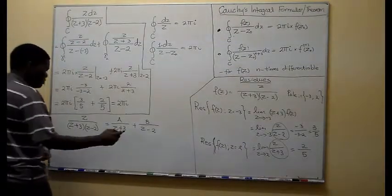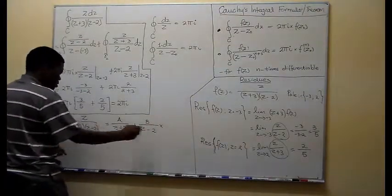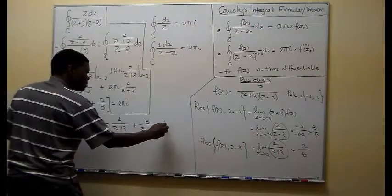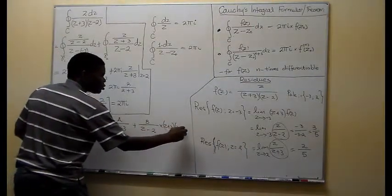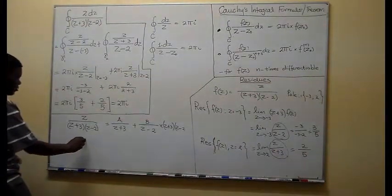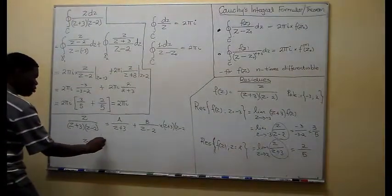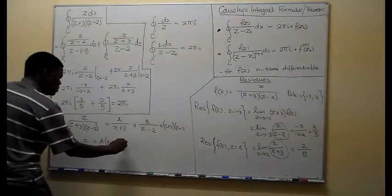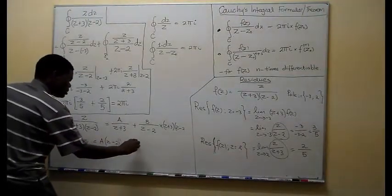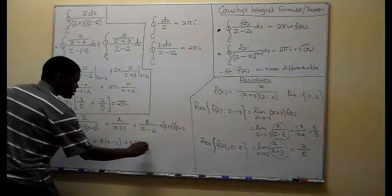So what I am going to do here is multiply both sides of this equality by (z+3) multiplied by (z-2), which will give us z equals a multiplied by (z-2) plus b multiplied by (z+3).